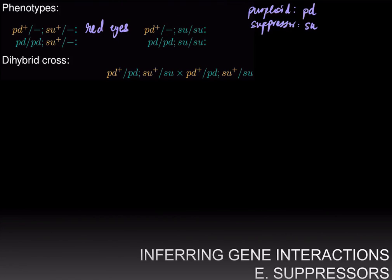If you are homozygous for the mutant allele of purploid — pd over pd — and have at least one wild-type allele of the suppressor, SU+ over dash, then you have purple eyes. If however you have one wild-type allele of purploid, pd+ over dash, but are homozygous for the mutant allele SU over SU, you still have red eyes since the suppressor has no phenotype on its own.